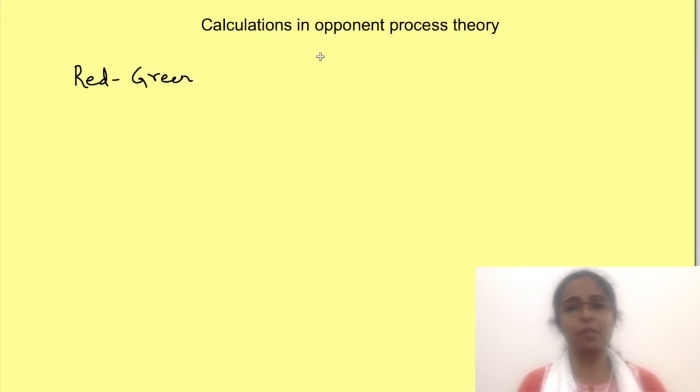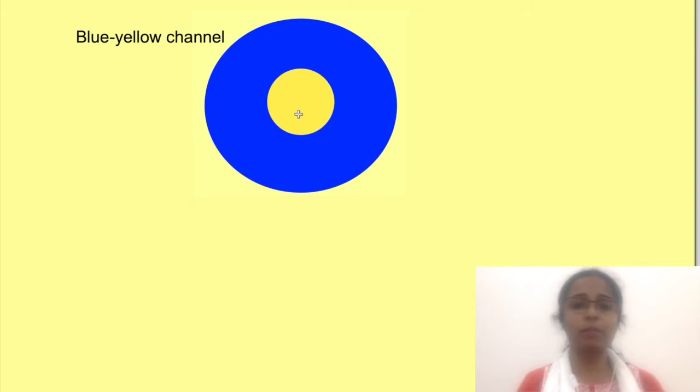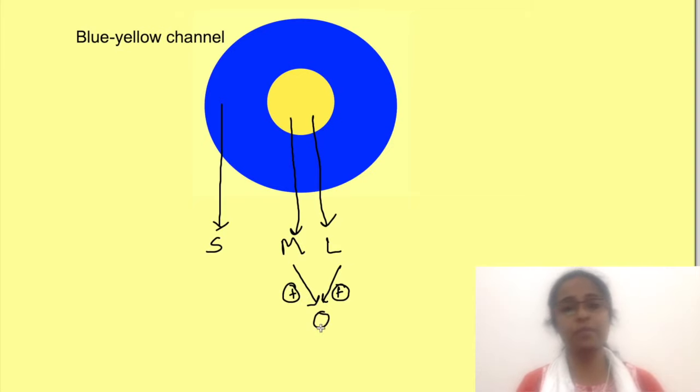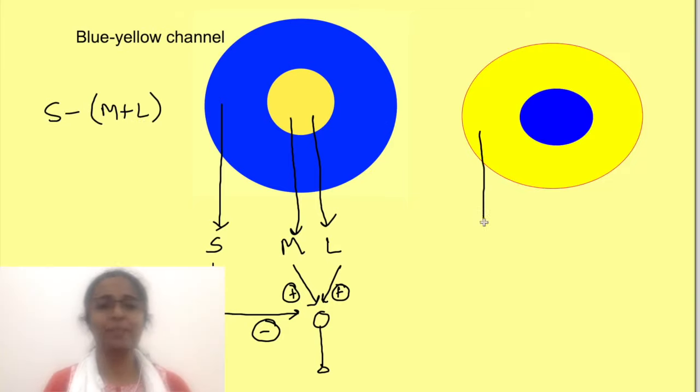Similarly there are two other calculations. One is blue yellow channel and the other is luminance channel. Just see in this picture of yellow color surrounded by blue. Yellow at the center stimulates both M and L cones while blue stimulates surrounding S cones. The signal from M and L cones stimulates downstream cells while from the surrounding S cones inhibits them. So the response from this cell is different, and just like red green channel there will be cells which are on blue center and off with yellow surround.